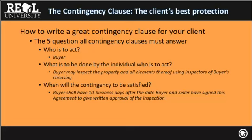Then you need to actually state what activity is going to be done. In the example: the buyer may inspect the property and all the elements thereof using inspectors of the buyer's choosing. So there we've outlined the contingency — inspect the property and all elements thereof with the buyer's choosing. That's just one section of the contingency clause.